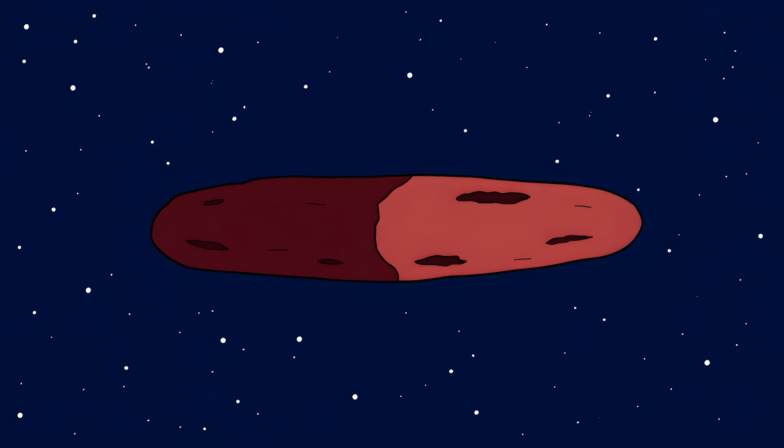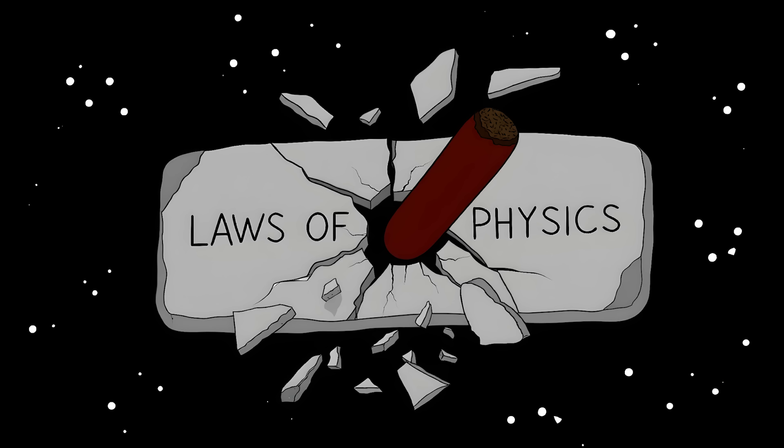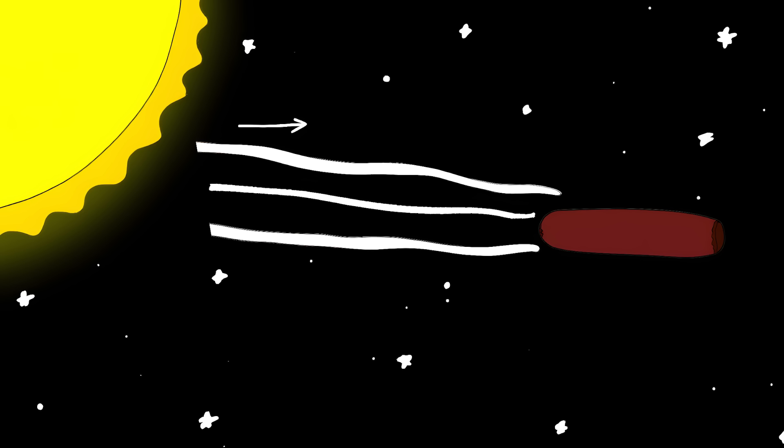Imagine a skyscraper flying through space at 196,000 miles per hour. But this space cigar started doing things that broke the laws of physics. It started speeding up as it left our solar system.